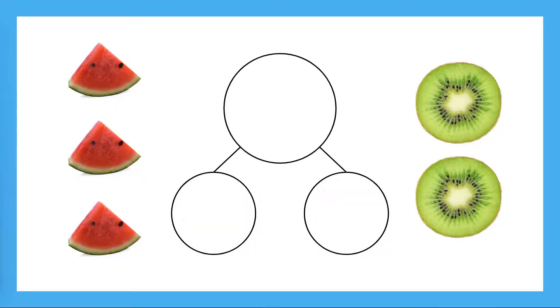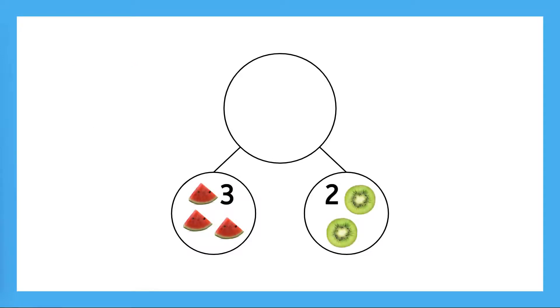Now, let's try to show how many watermelon and kiwi slices we have on this number bond. We don't know the whole, but we do know the parts. What are the two parts we're working with? There are three watermelon slices and two kiwi slices. So our parts are three and two. We don't know the whole right now, but we do know the parts. We also know that a whole is made of parts. So, what can we do to find the whole? We can put these parts together to find the whole.